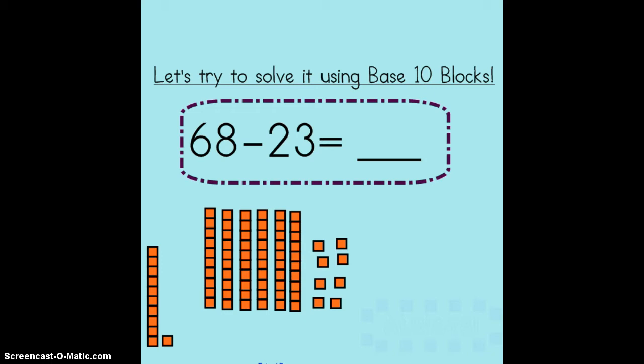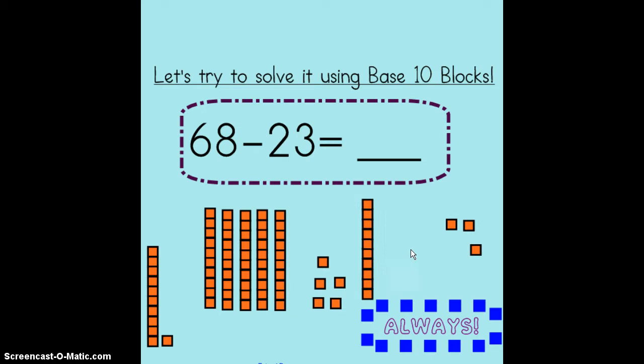Just like when we add we always start with the ones when we subtract. First I'm going to take away three ones because I have a three in my ones place in the number 23. Then I'm going to take away two tens because there is a two in my tens place in the number 23.